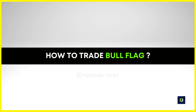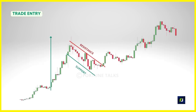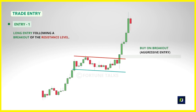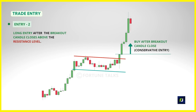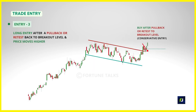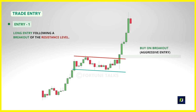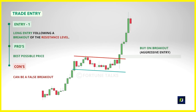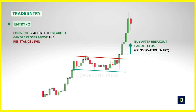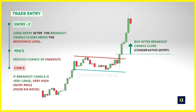For entry criteria on the bull flag, being a bullish continuation pattern we are only interested in a break above the resistance line. You can take a long entry following a breakout — entering at the moment the price breaks above the resistance trendline, or buying above the high of the breakout candle after it closes. The second method is to wait for a pullback or retest back to the breakout level and then take a long entry when the price moves higher. Entering at the breakout may result in a false breakout, but gives the best price. Waiting for a close above the highs reduces false breakout chances but means entering at a higher price.